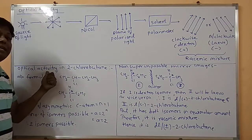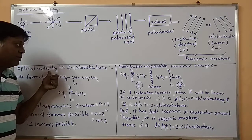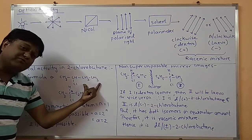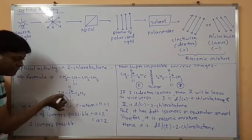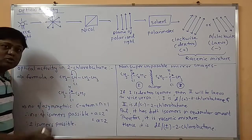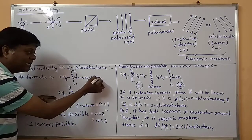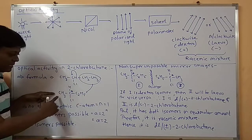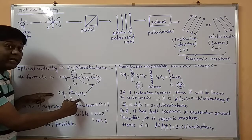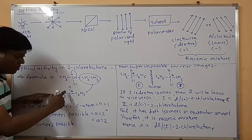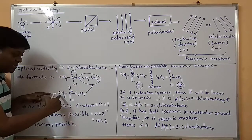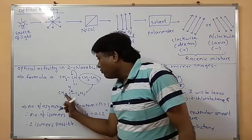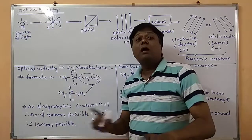Now the formula for 2-chlorobutane is CH3–CHCl–CH2–CH3. We can write this as CH3, CHCl, and if we consider CH2CH3 as C2H5, then it becomes CH3–CHCl–C2H5. This means the center carbon atom has four different attachments: CH3, H, C2H5, and Cl. That carbon is called an asymmetric carbon atom.